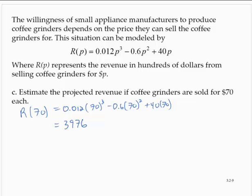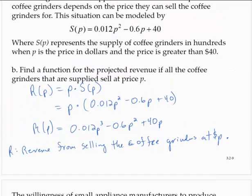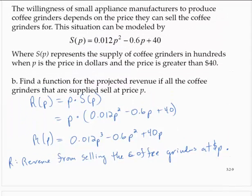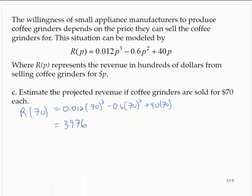And on the previous slide I made an error back here. The revenue would be in hundreds of dollars, since the supply is in hundreds and we're multiplying by p dollars, we would have hundreds of dollars.